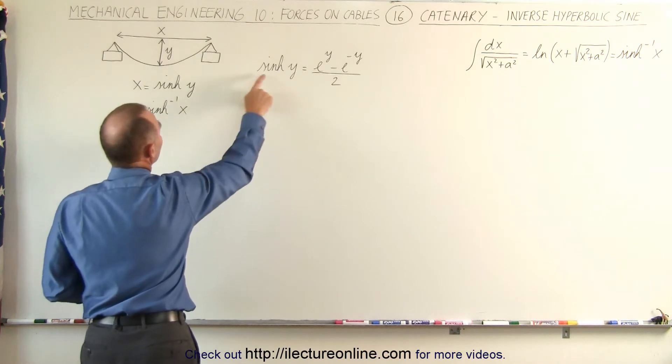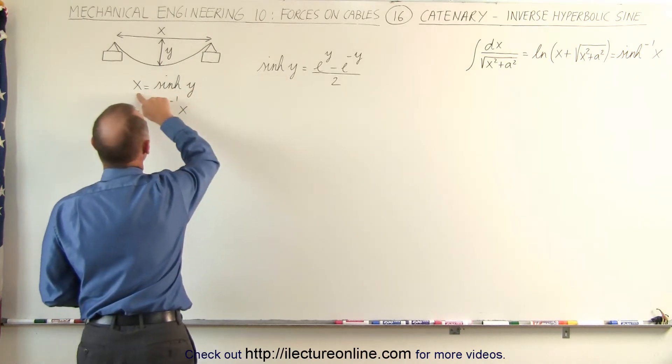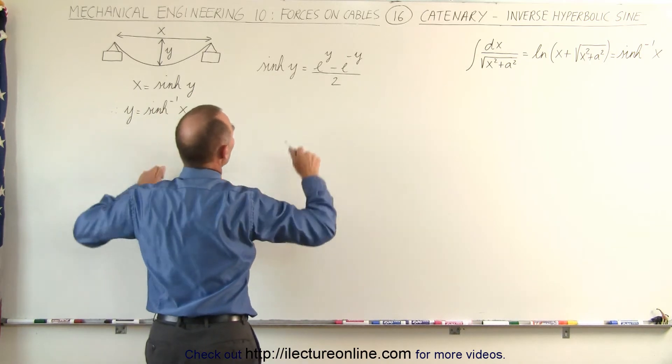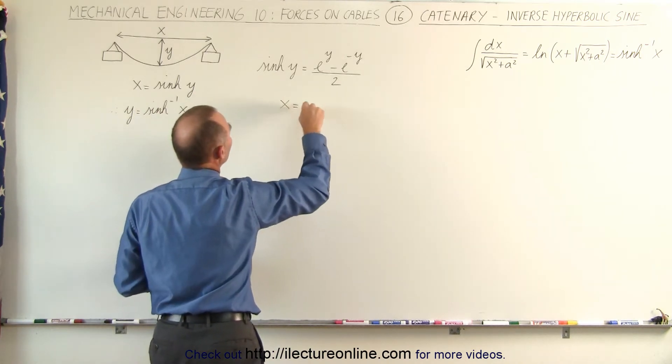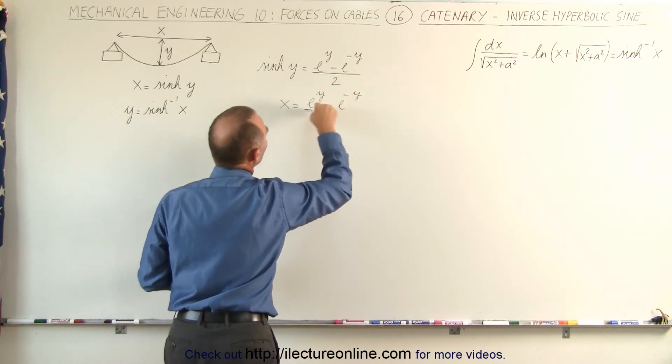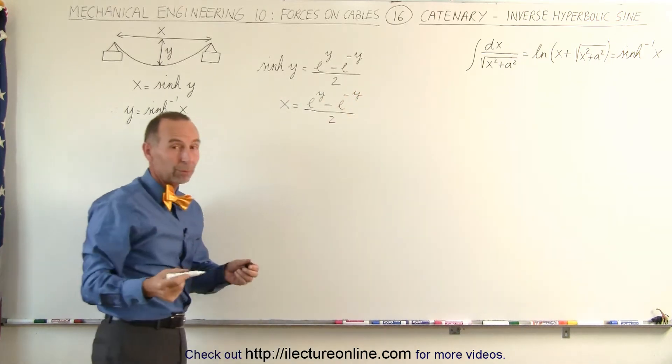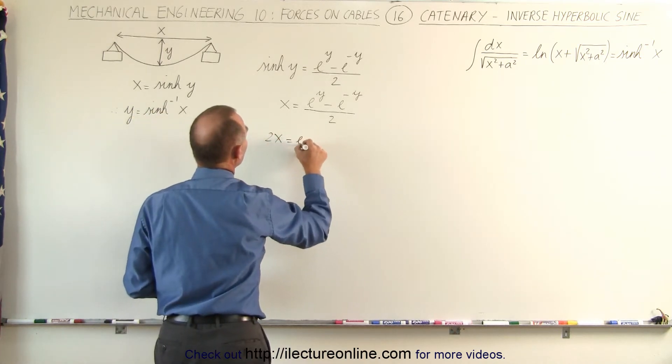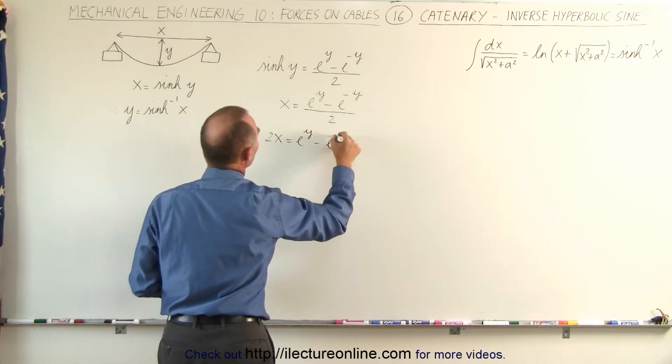First of all, if the hyperbolic sine of y is equal to x, we can replace this for x and write the equation as follows. We can say that x is equal to e to the y minus e to the minus y divided by 2. Then multiply both sides by 2, we get 2x is equal to e to the y minus e to the minus y.